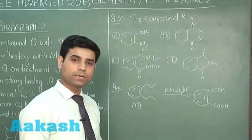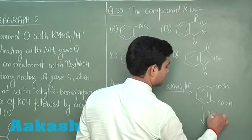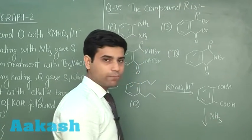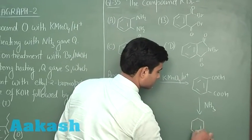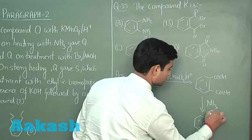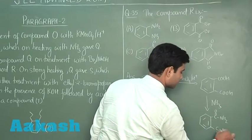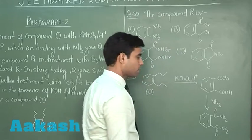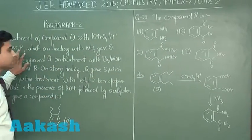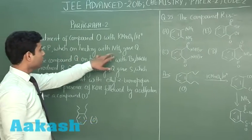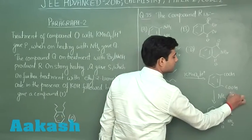When it reacts with ammonia, an amide will be formed. According to the question, O on treatment with KMnO4 and H+ gives us P, and P on reaction with ammonia gives us Q. So this is P and this is Q.